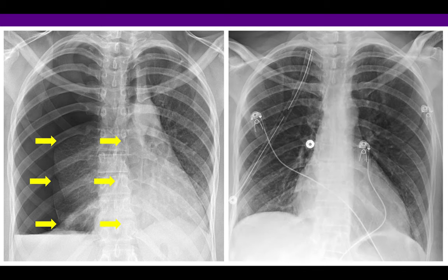This degree of atelectasis is perhaps best appreciated once the pneumothorax has been treated — the surgical chest tube has been placed, the air evacuated, and the lung is now well aerated and well inflated. Then you get a sense of just how much volume loss or collapse really occurred on the right side.